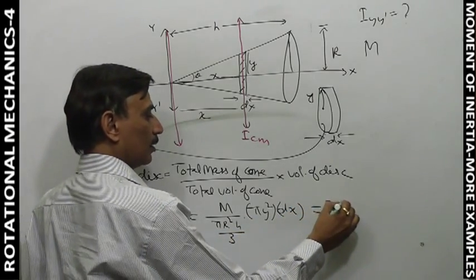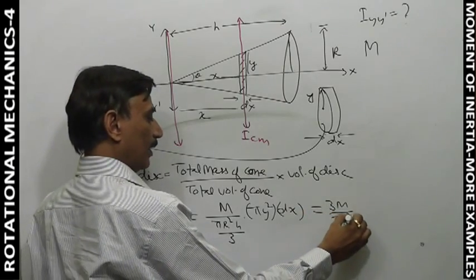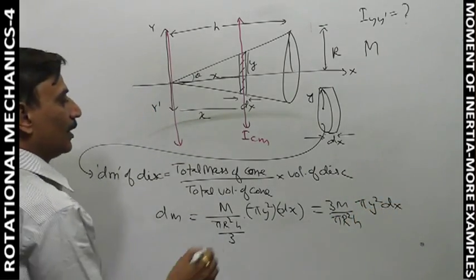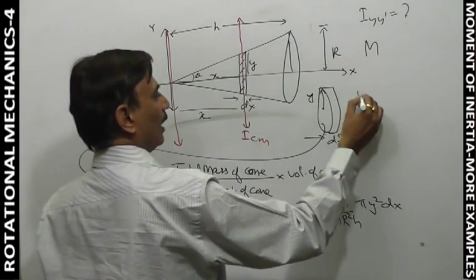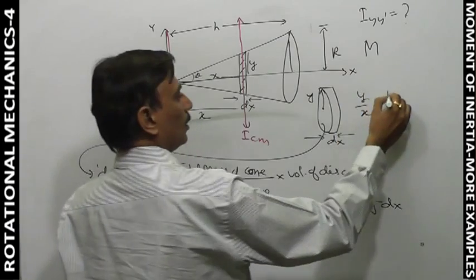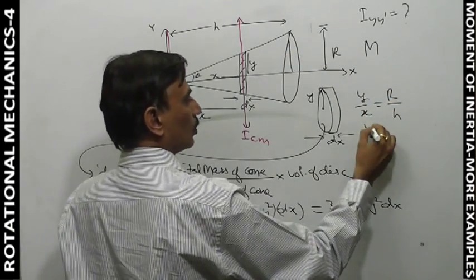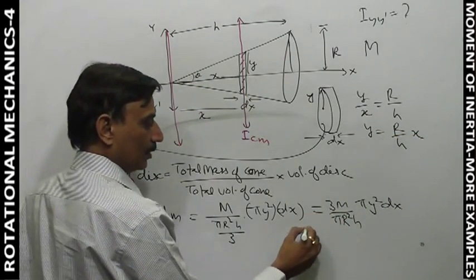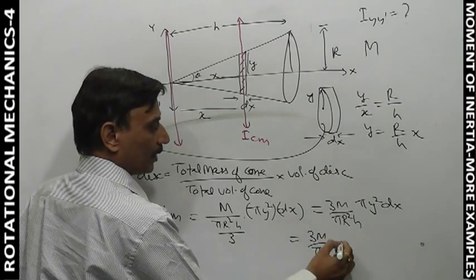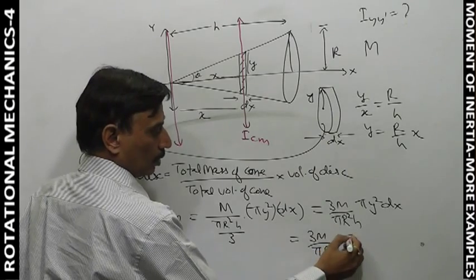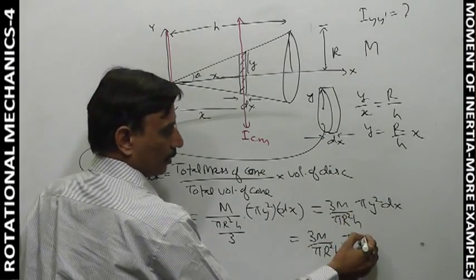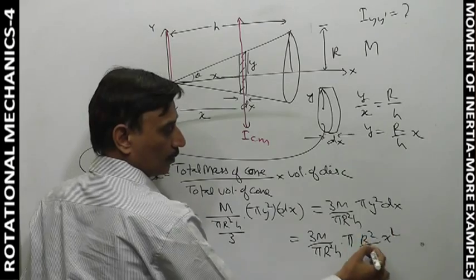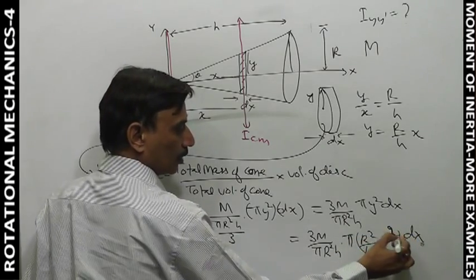Taking 3m to the numerator: dm = 3m/(πr²h) · π·y²·dx. Now we also said that y/x = r/h, so y = (r/h)·x. Substituting: y² = r²/h² · x². So dm = 3m/(πr²h) · π · (r²/h²)·x² · dx.